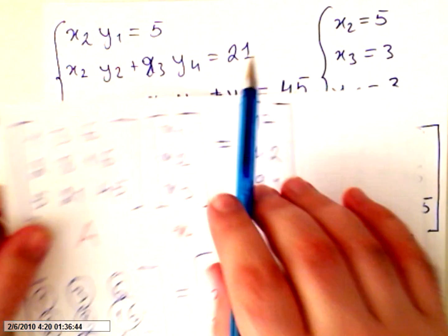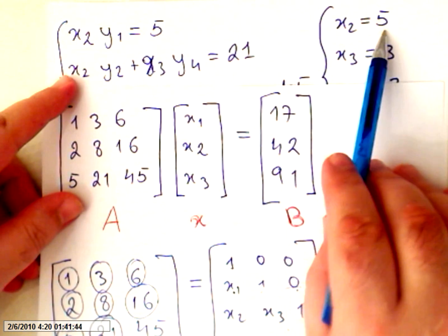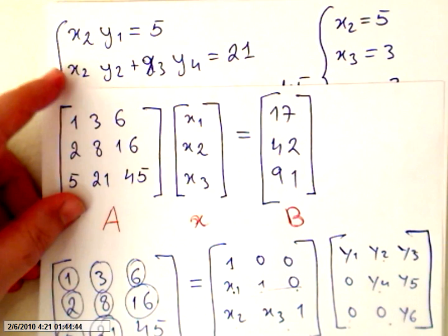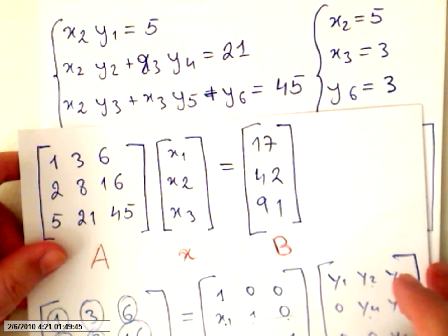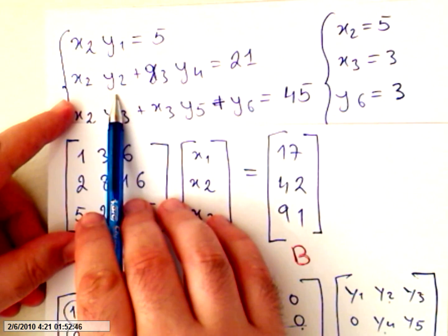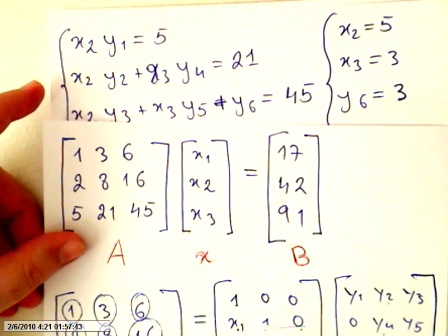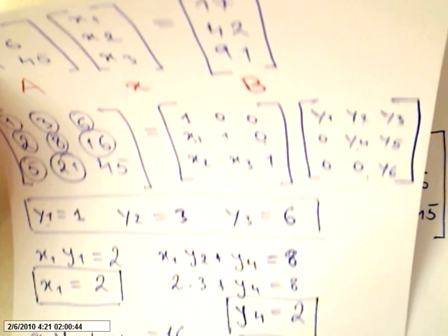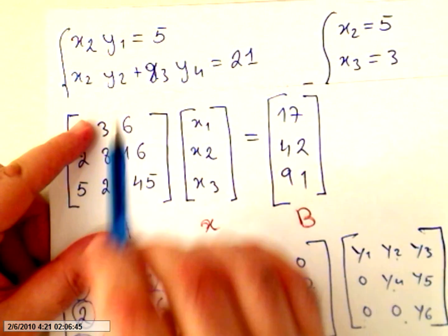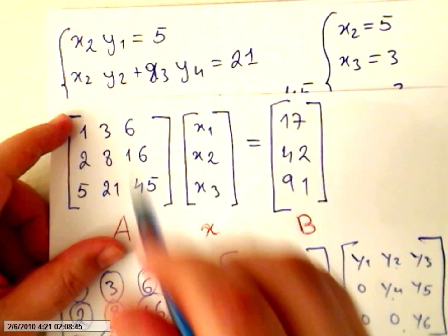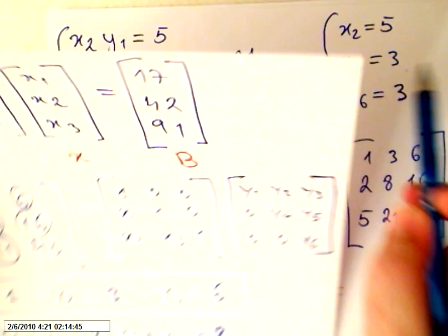Now we know x2 is 5, we know y2 is 3, so 5 times 3 would be 30. We know y4, y4 is 2. So it's just a matter of back replacing and you will get x3 equals 3.